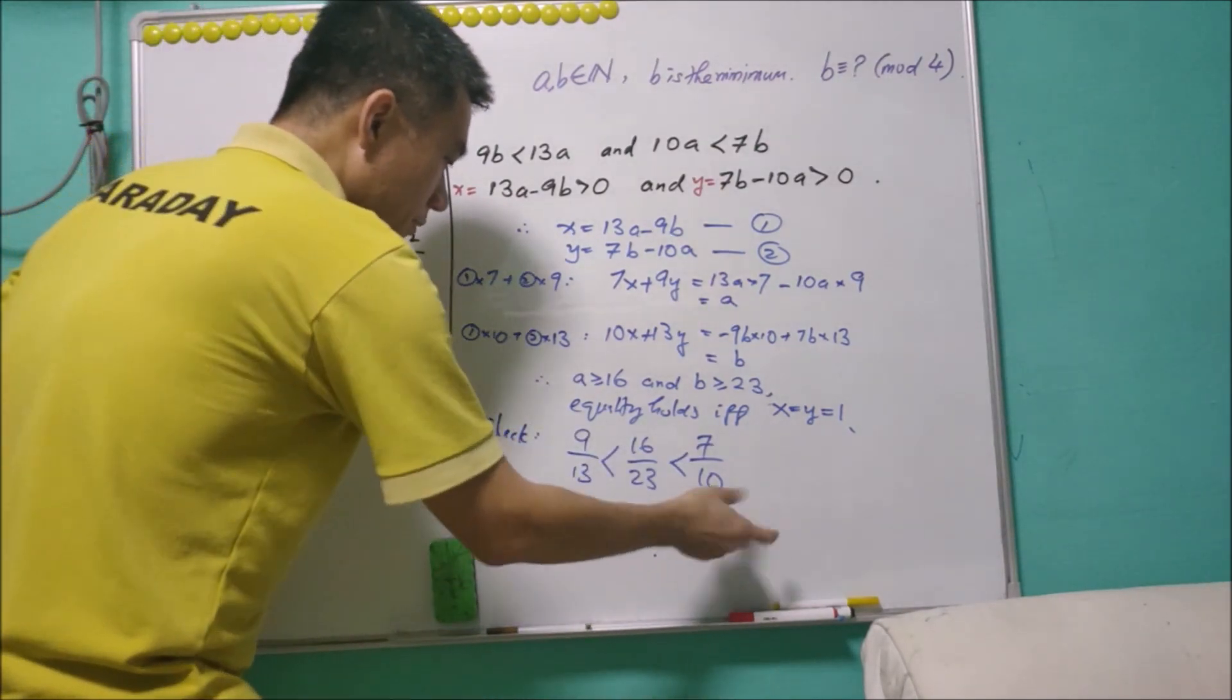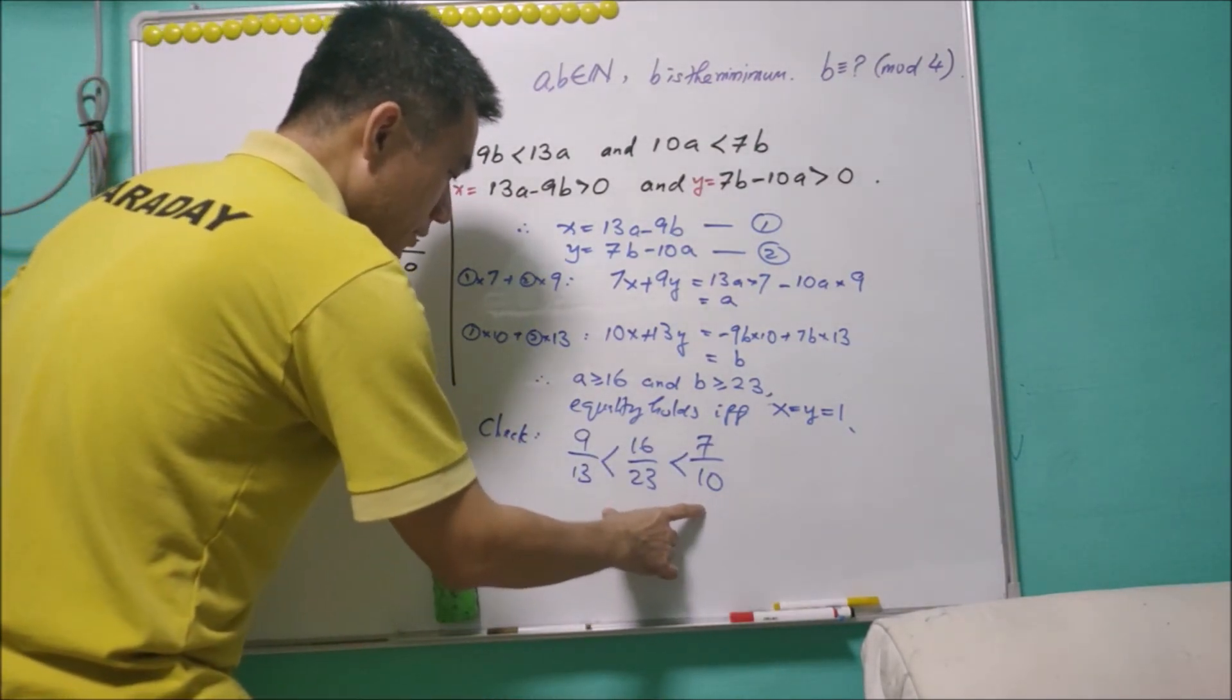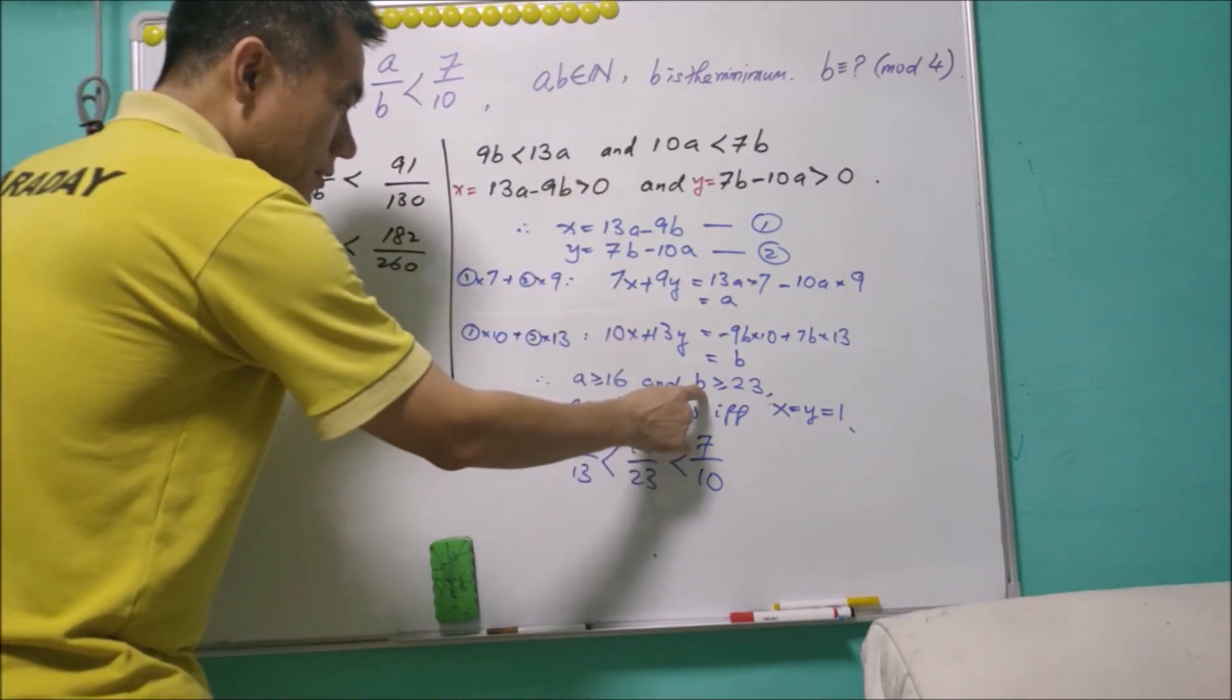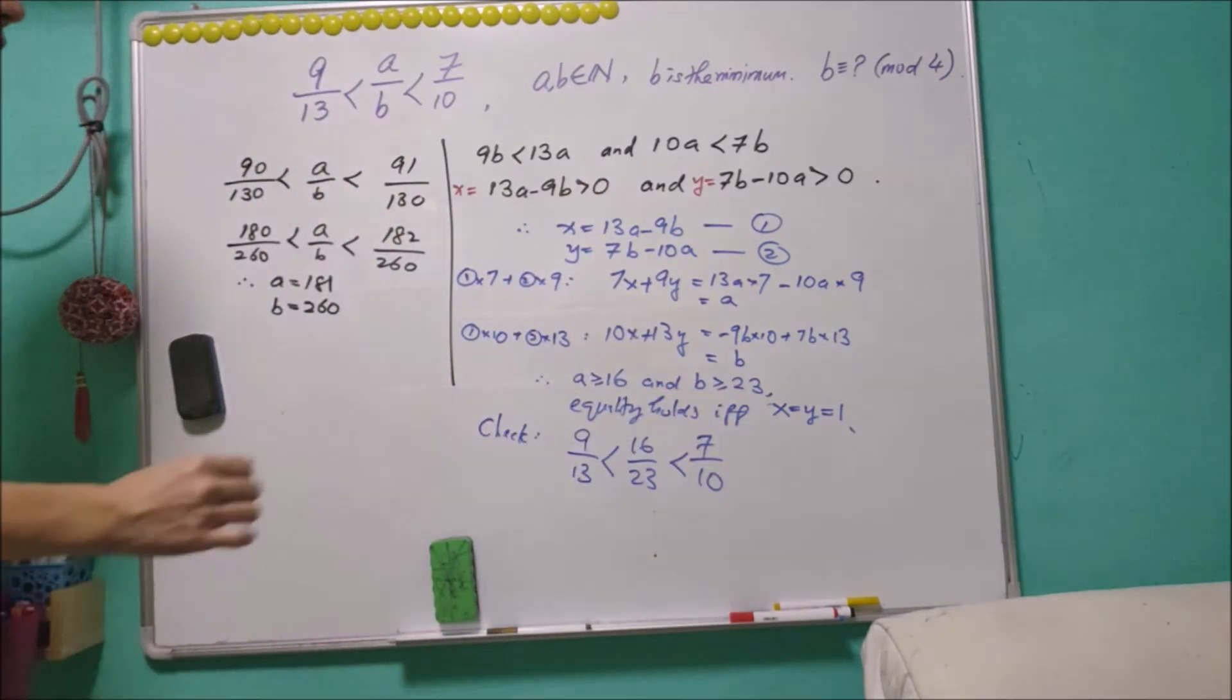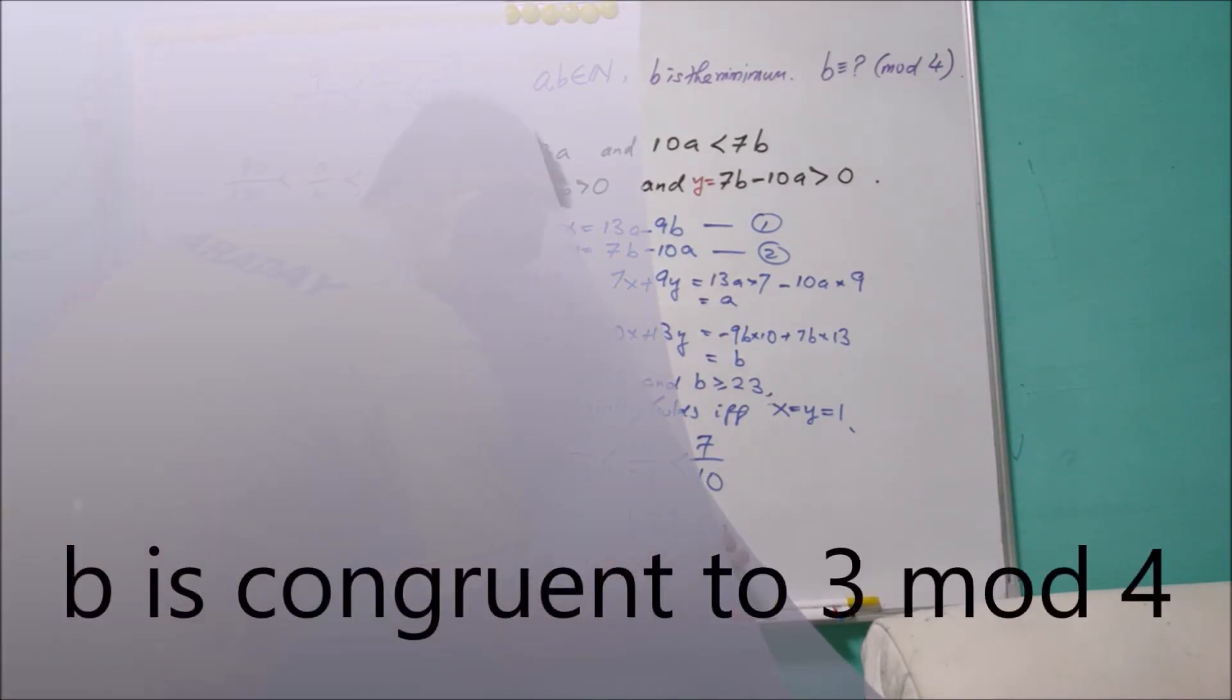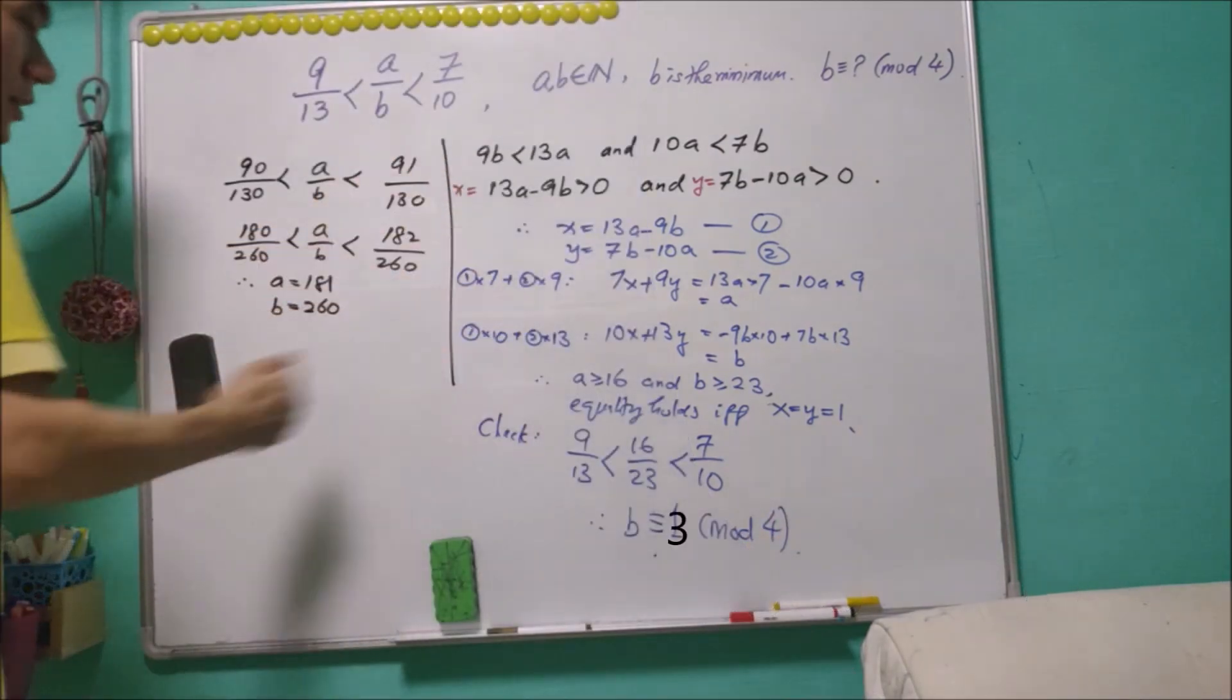We can do a simple checking that the equality here is indeed true. And from here, b is actually equals to 23 and it is minimum. And therefore, b is congruent to 3 mod 4. So this is method 1.